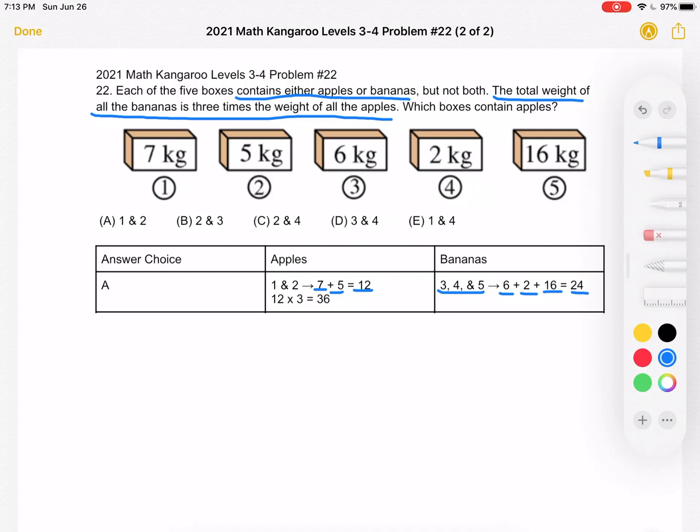Now let's verify this condition. The total weight of all the bananas, if answer choice A is correct, would be 24. However, the total weight of all the apples is 12, and when we multiply that by 3, we get 36. 24 is not equal to 36, so answer choice A is incorrect.